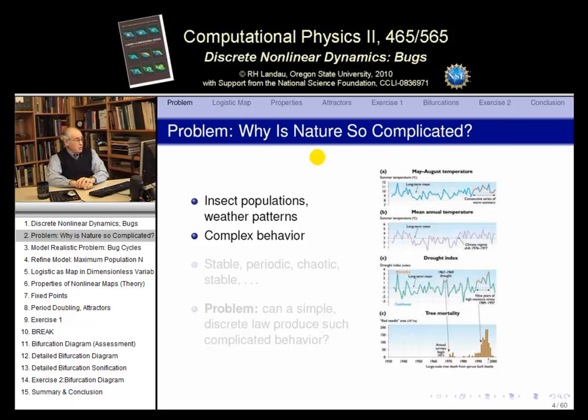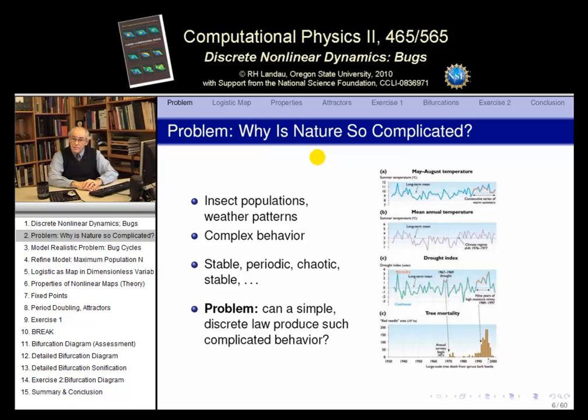And it's hard to believe that anything as complicated as insect populations, weather patterns, some of the graphs you see here on the slide, have something simple happening. This is complicated. There doesn't seem to be any structure or underlying simplicity here. As we'll see, even very complicated behavior could have very simple mathematical model underneath. And that's interesting. So here we have an example of systems that look chaotic, sometimes periodic, sometimes stable, like the weather. So that's the problem. Can a simple discrete model, by discrete we mean not a differential equation, just plain algebraic equation, can a discrete model produce complicated behavior?